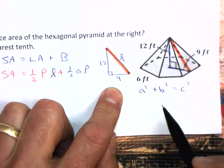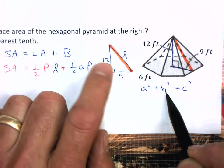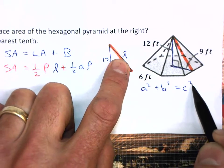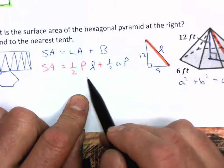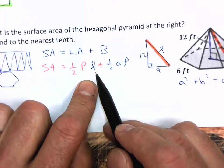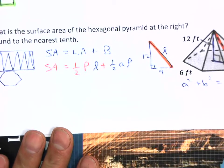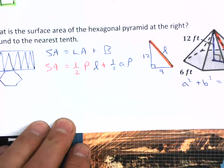So use your Pythagorean theorem. A squared plus B squared, which would be 9 squared plus 12 squared, equals the slant height squared. And then solve that for the slant height to be able to plug this into your equation here. So that should be enough information for you to be able to do that. Go ahead and pause the video to do so.